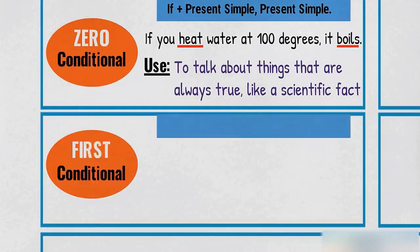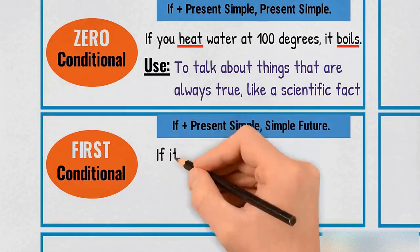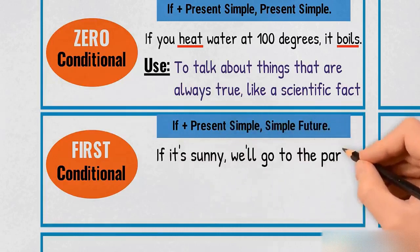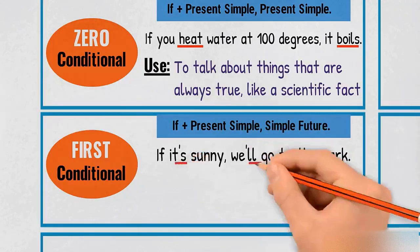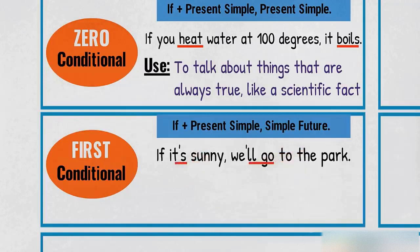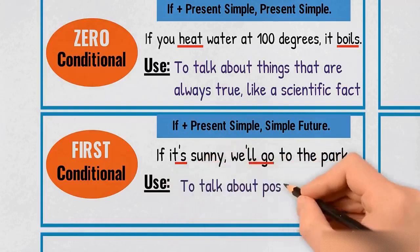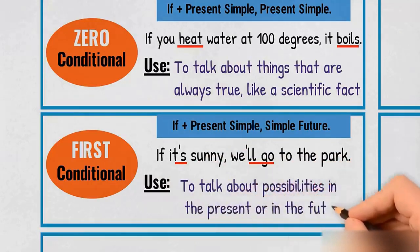First conditional. If plus present simple, simple future. If it's sunny, we'll go to the park. Use: To talk about possibilities in the present or in the future.